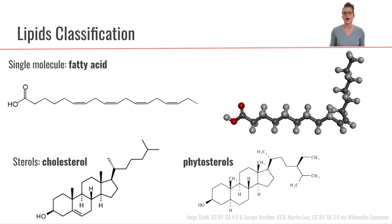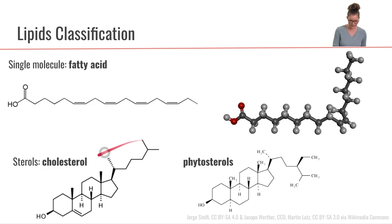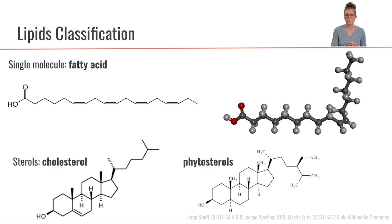Those are our fatty acids. The other large category of lipids are the sterols. Sterols have a very different structure compared to fatty acids — they have a ring-like structure called a steroid nucleus, and then a hydrocarbon tail attached to one end. In animals the primary sterol is called cholesterol, which is what we see pictured here. Cholesterol ends up being a precursor for many other compounds within animals, as well as being an important compound in its own right. Plants, however, do not make cholesterol.